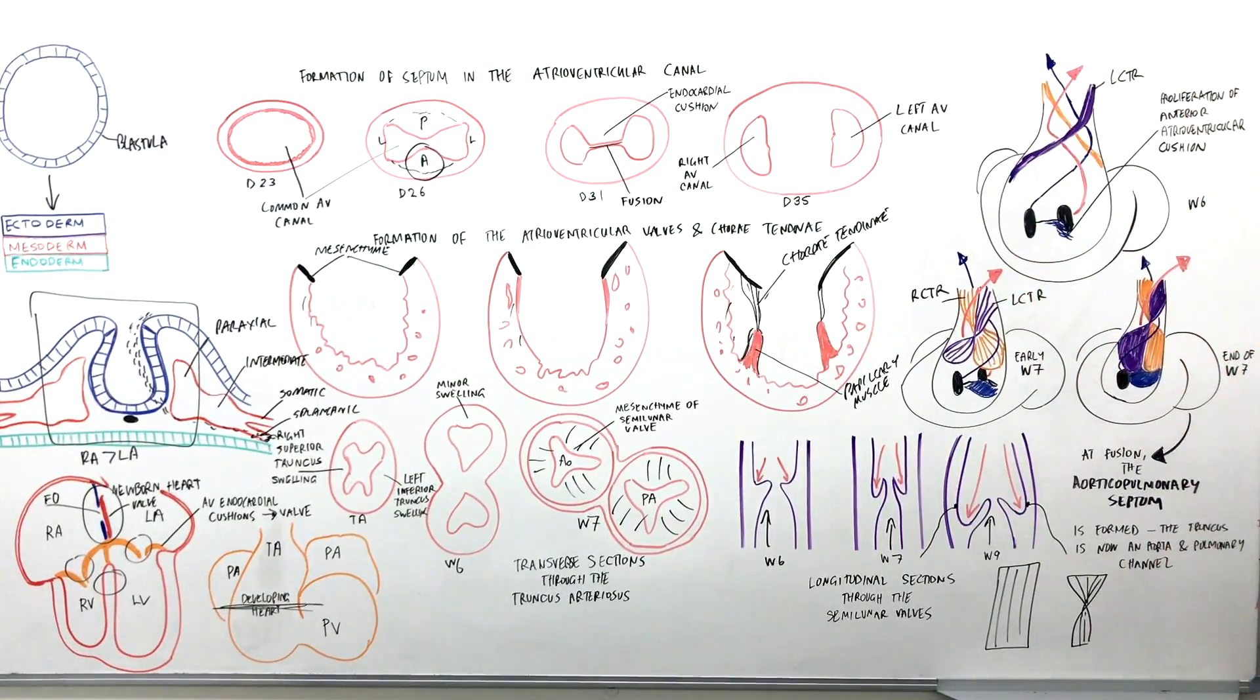And the combination of the anterior endocardial cushion, the right and left conotruncal ridge, that closes the interventricular foramen and also separates the blood flow from the aorta from the pulmonary trunk.